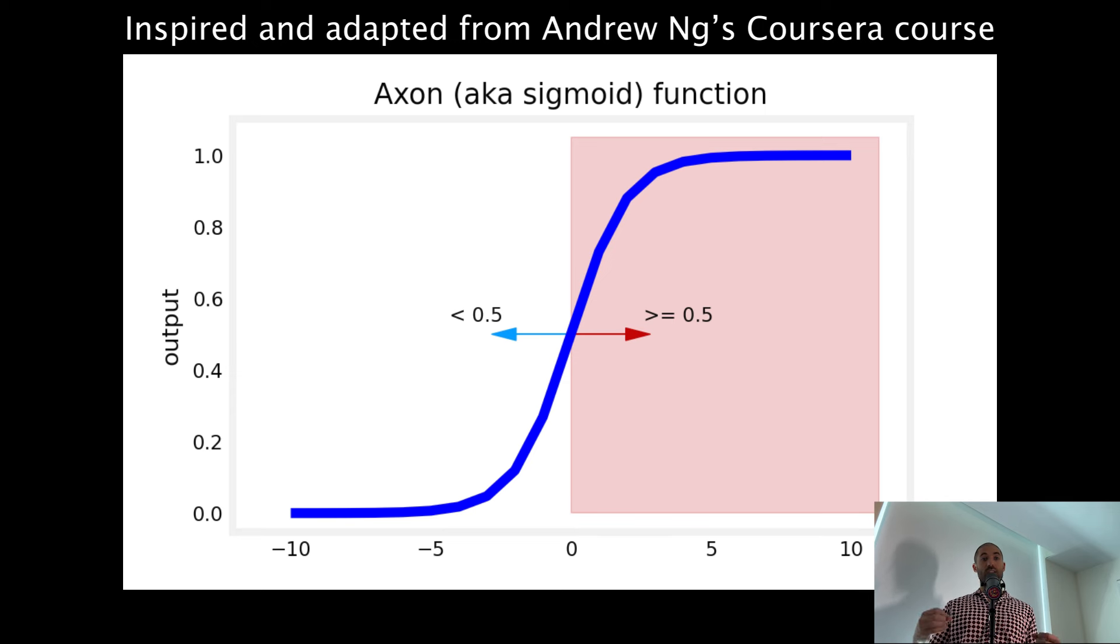This sigmoid function is cool because it always spits out a value between 0 and 1. If the sigmoid function spits out a value greater than or equal to 0.5, we interpret that to mean our neuron is firing a signal into its surroundings. If the sigmoid function spits out a value less than 0.5, we take that to mean our neuron is inactive or not responding to its input.